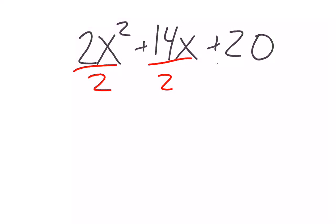What about 2x squared plus 14x plus 20? When writing those down, I notice all of those are divisible by 2. So 2 is my GCF. I'm going to go ahead and write that down with my answers.